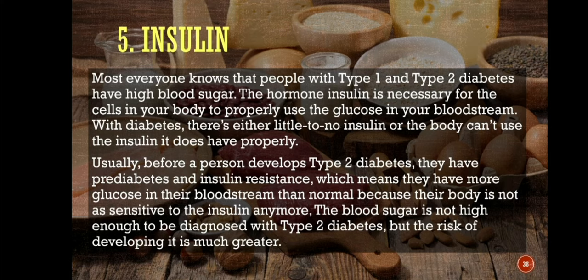Therefore, the blood sugar is not high enough to be diagnosed with type 2 diabetes, but the risk of developing it is much greater. There are two types of diabetes: one is insulin dependent and the second is insulin independent.